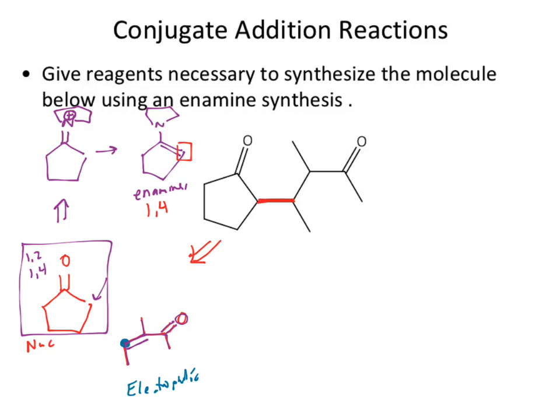The enol form gets you 1,2 and 1,4 addition. The enamine gets you only the 1,4 addition. The enol is dead in the middle between both the Grignard activity and the Gilman activity, so it does both 1,2 and 1,4. If I only want 1,4, I need a different nucleophile — that different nucleophile can be the enamine. The enamine will give exclusively the 1,4, and that has to do with the lower electronegativity of the nitrogen setting up a better — or a less negative — negative charge.